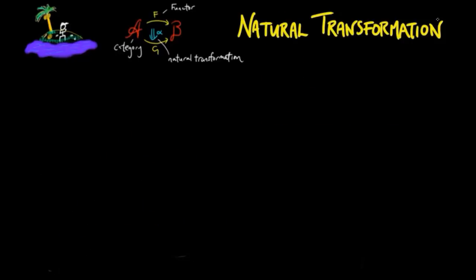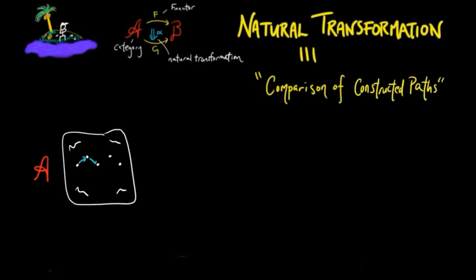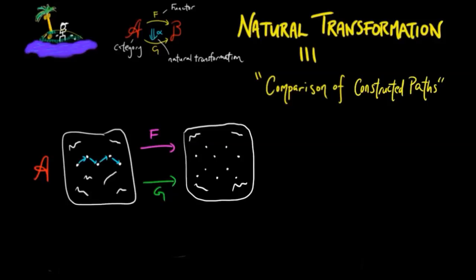Finally, natural transformations are comparisons of constructions. Given a category A and two functors F and G to a category B, a natural transformation is a collection of morphisms in B which connect paths constructed by F to paths constructed by G on the same objects.